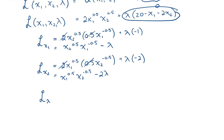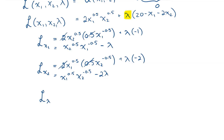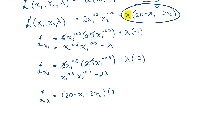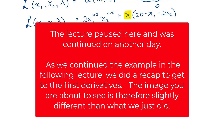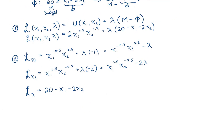Finally, we take the derivative with respect to lambda. The first term's derivative is 0, so we ignore it. For the second term, 20 minus x1 minus 2x2 is really a scalar coefficient to lambda, and the derivative of lambda is 1, giving us 20 minus x1 minus 2x2. Now we have all our partial derivatives, and the next step is to set each of them equal to zero and solve this system of equations.